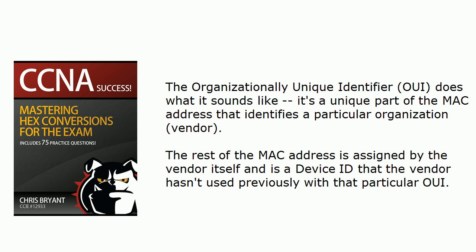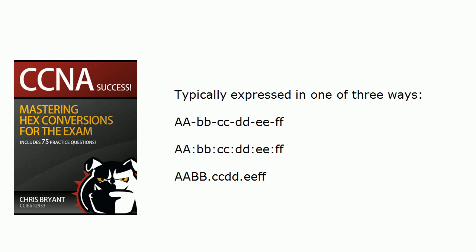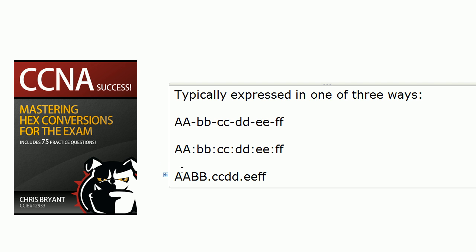The organizationally unique identifier — the OUI — does exactly what it sounds like: it's the unique part of the MAC address that identifies a particular organization or vendor. The rest of the MAC address is assigned by the vendor itself and is called the device ID, which the vendor has not previously used with that OUI. The first half of the MAC address is the OUI and the second half is the device ID — that's the best way to remember it, regardless of how the address is expressed.